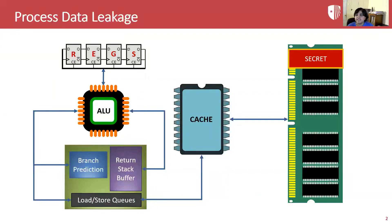As defenses against control hijacking attacks become more widely deployed, attackers are turning their attention to data-only attacks. Leaking process data using data-only attacks can pose a significant security threat, for example by exfiltrating secret server keys or private user information. Moreover, the recent spate of transient execution attacks have shown that sensitive process data is not safe from leakage if it is in main memory.